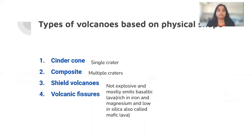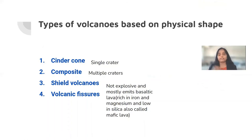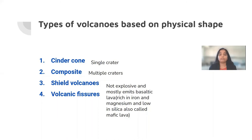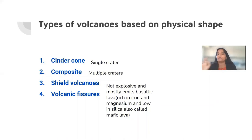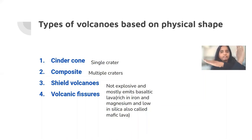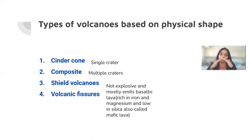Types of volcanoes based on physical shape: First, cinder cone volcanoes — they have one crater, one mouth of the volcano. Composite volcanoes have multiple craters — one on the top and others on the sides of the volcano. Shield volcanoes are not really explosive; lava effuses out slowly and forms like a shield. The elevation of a shield volcano is never more than 35 degrees — never very steep slopes, because the lava is not erupting with full force but effusing out gradually and cooling down easily, forming a shield rather than a typical cone.